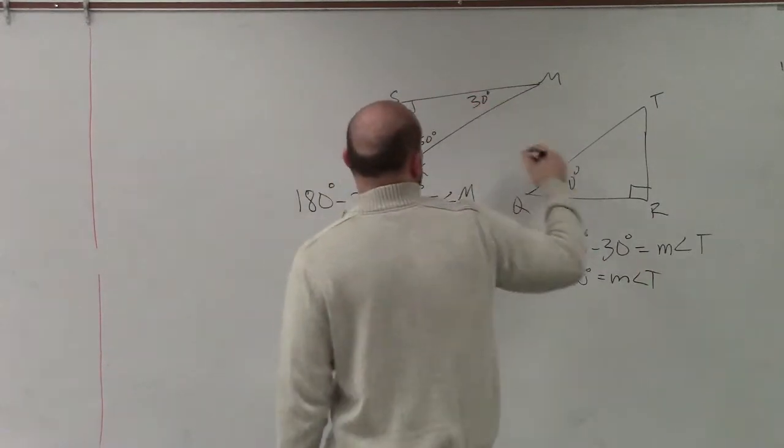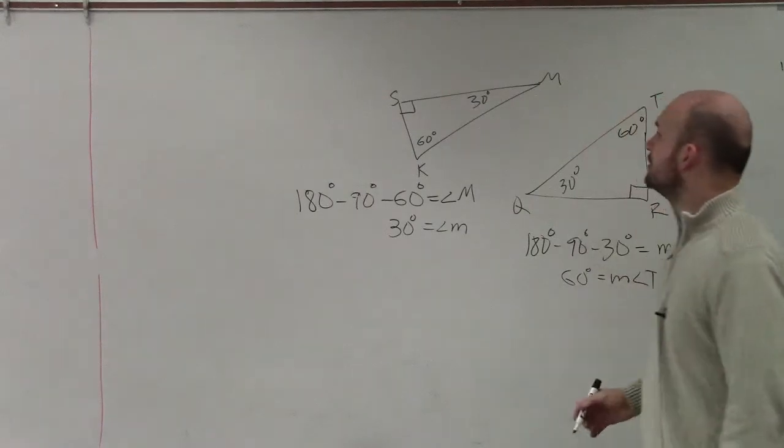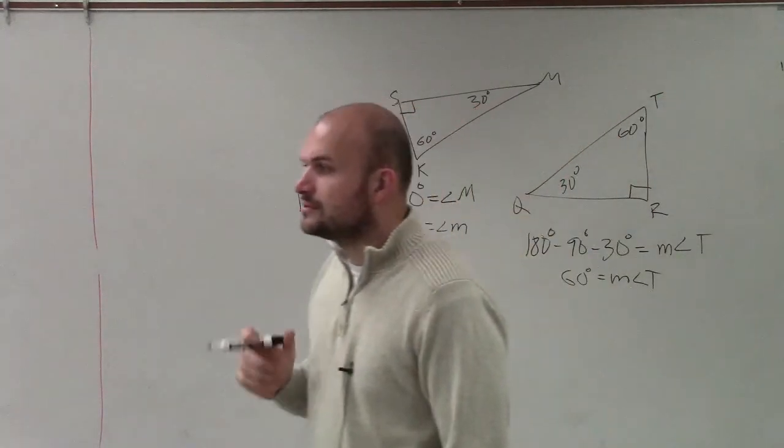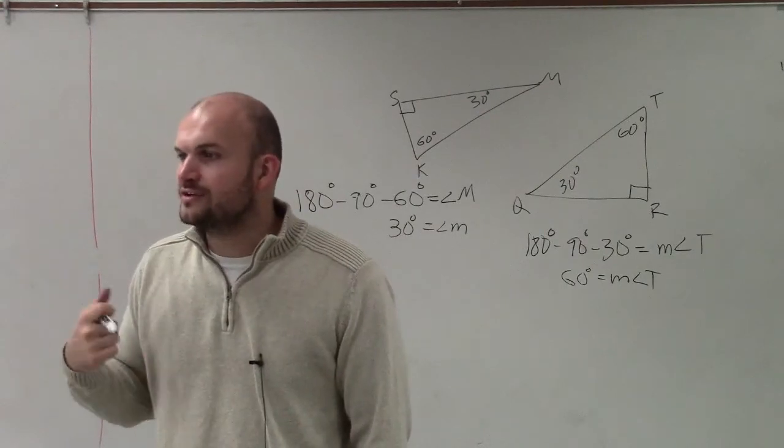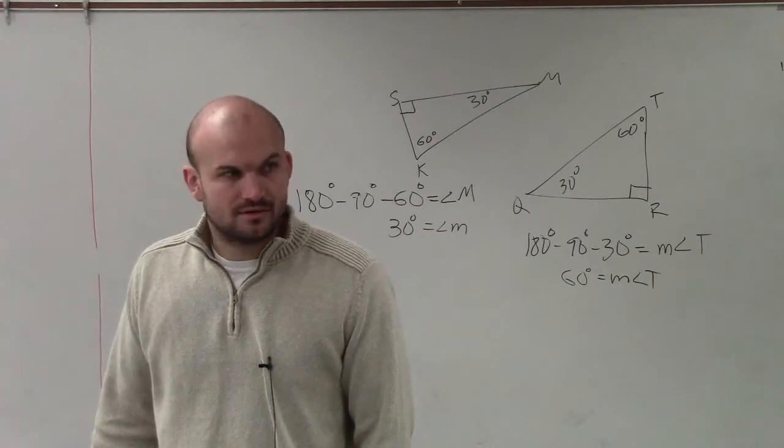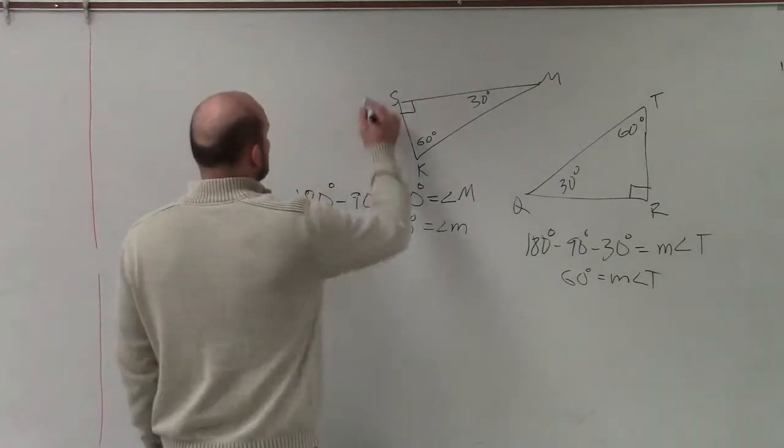So therefore, that's 30 and that's 60. Now, ladies and gentlemen, can we show that the two triangles have two congruent angles? Can we say that? Yeah. So guess what? These triangles are similar.